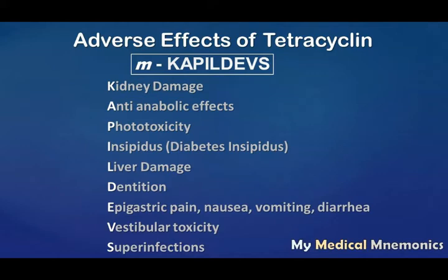V is for vestibular toxicity and S for superinfection. Now let's discuss each adverse effect: Kidney damage — the K in KAPIL DEVS — is mainly a concern when a patient already has kidney damage. In cases of renal failure, this drug should be avoided. Doxycycline is the tetracycline that is safer in that case. Anti-anabolic means catabolic — there is decreased protein synthesis and negative nitrogen balance. P stands for phototoxicity: skin rashes on sun-exposed parts.